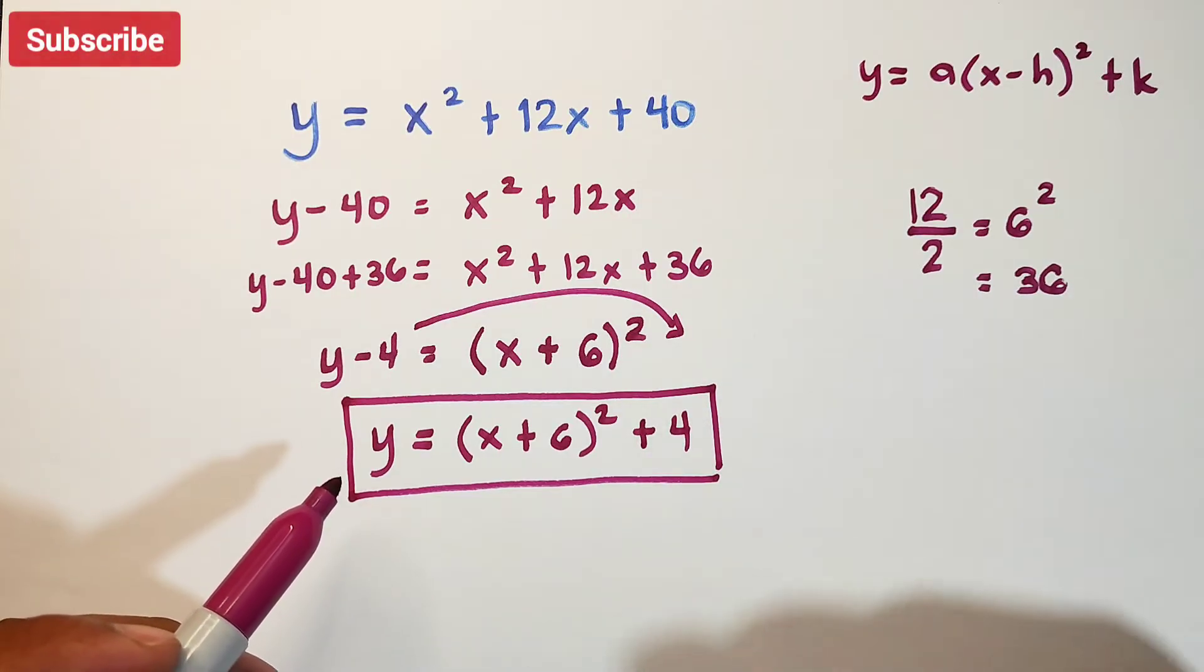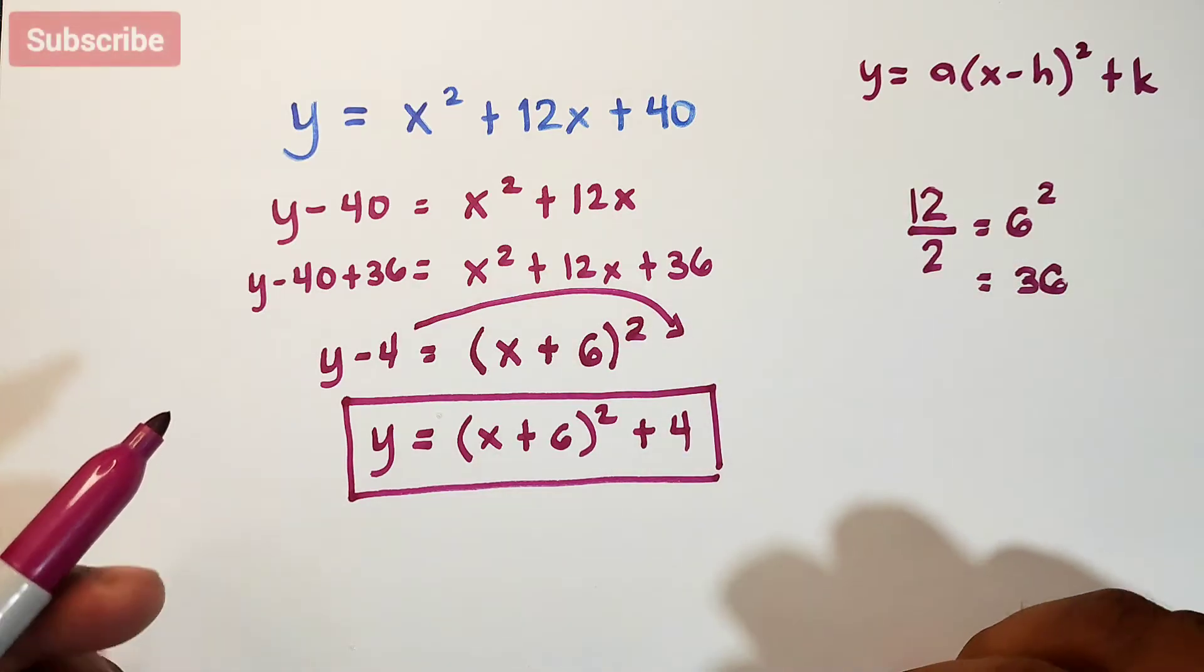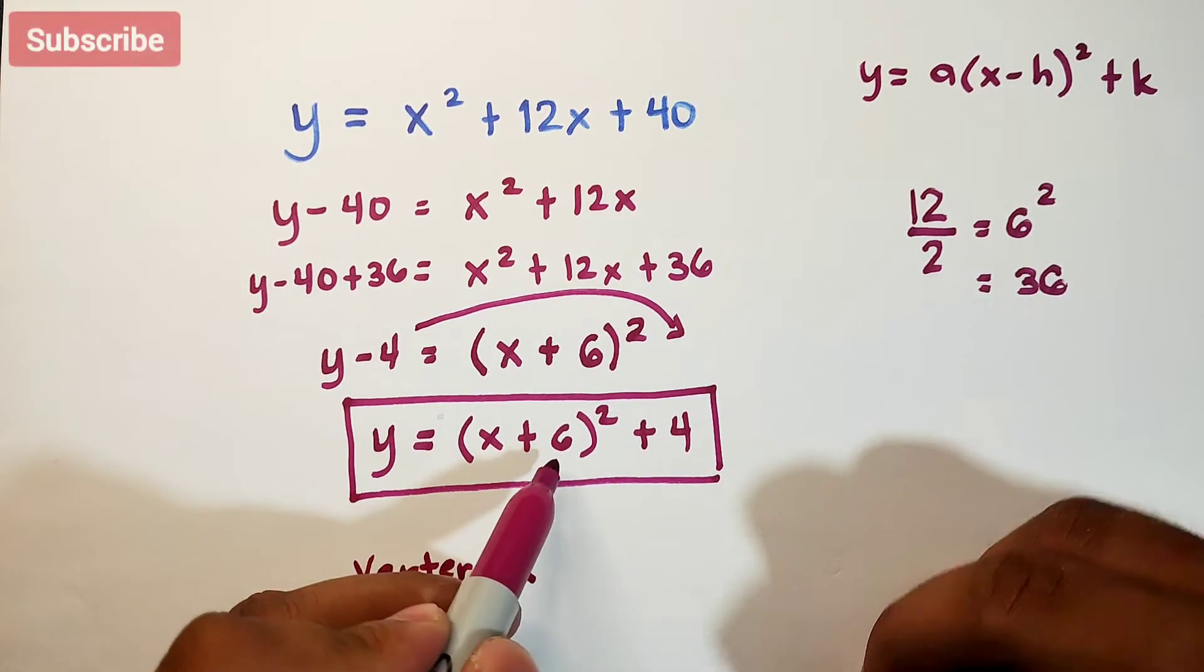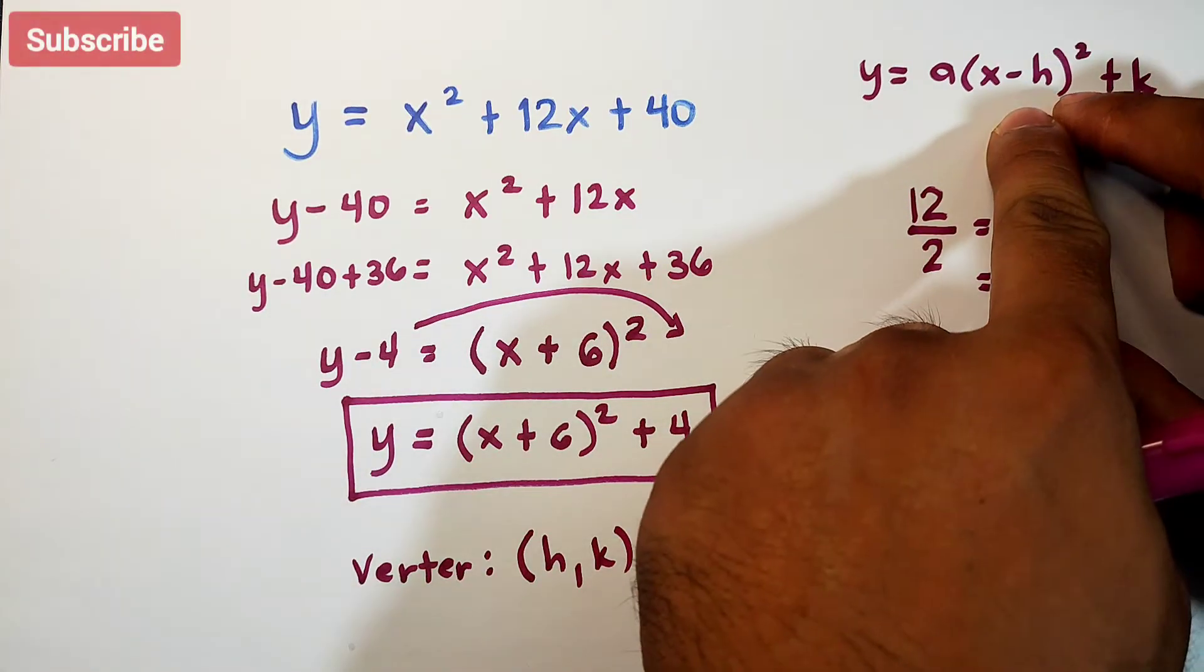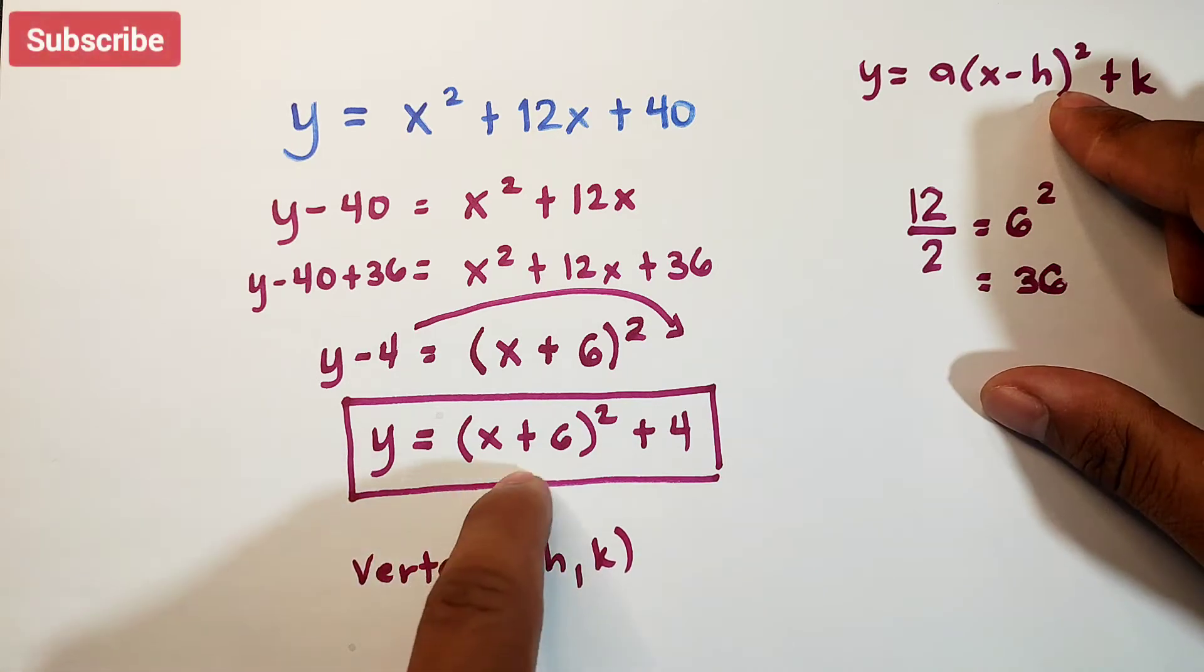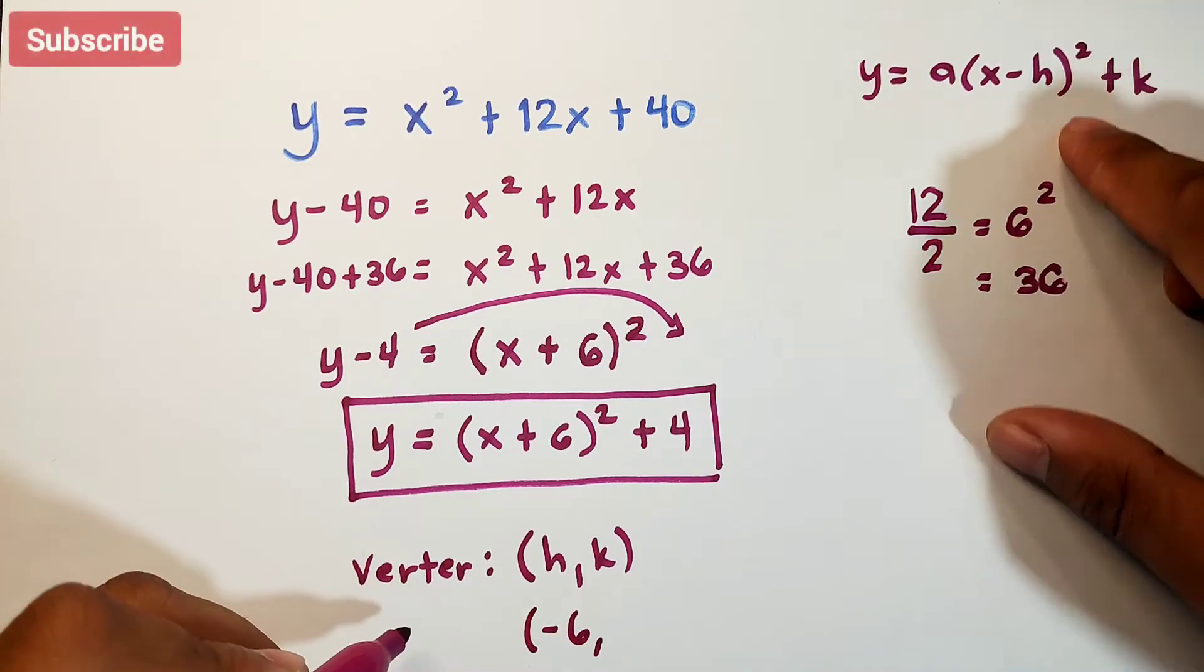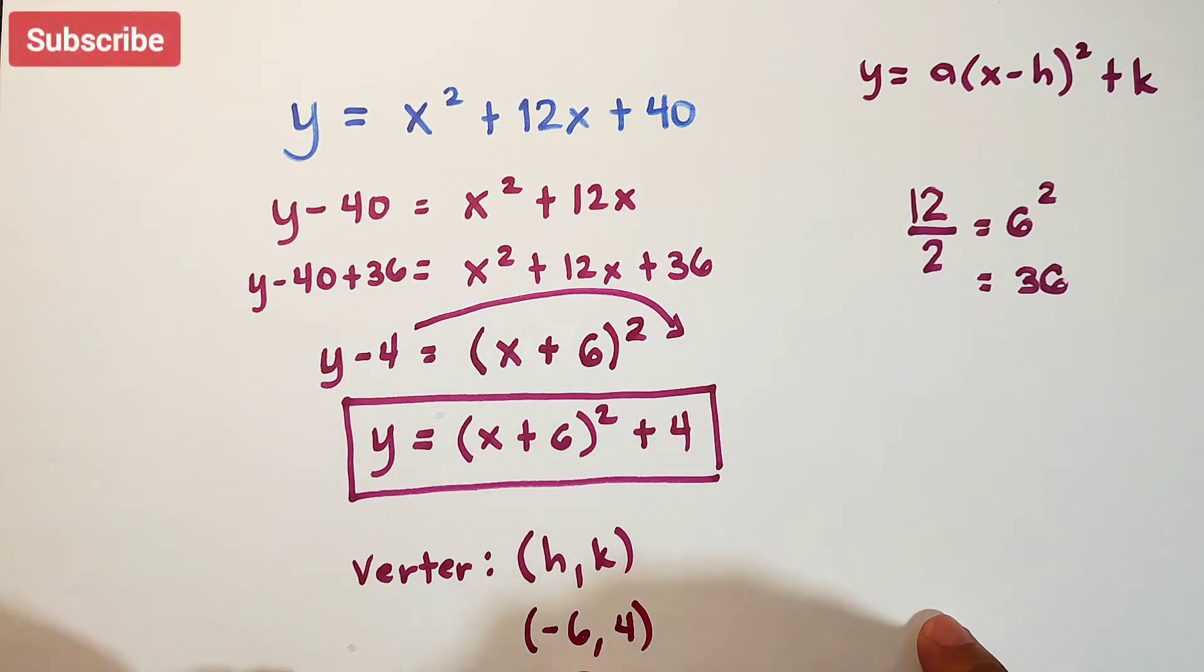When you transform the quadratic function to vertex form, you can easily identify the vertex. The vertex is represented by h, k. Since this is negative h or minus h, if it's plus 6, you don't copy it as positive 6. The value of h is the additive inverse or opposite sign, meaning that is negative 6. And for variable k, as is, it's 4. So the vertex of this quadratic function is negative 6 comma 4.